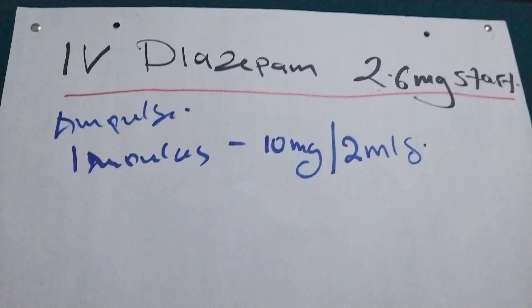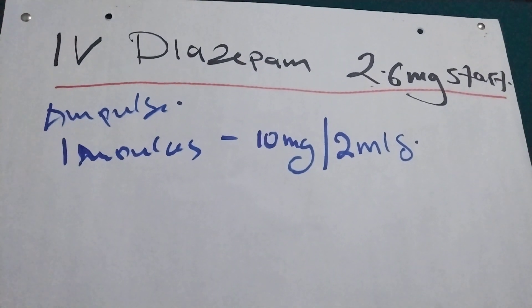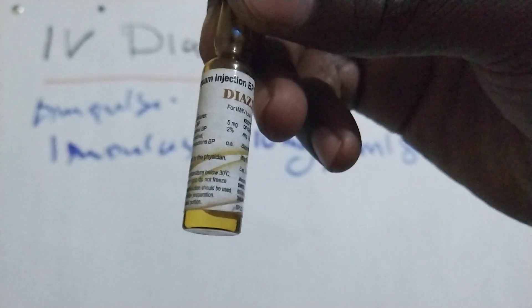So let me show you how the Diazepam looks like. This is the Diazepam. 5mg per mil in 2 mils. As you can see, Diazepam injection 5mg per mil in 2 mils.